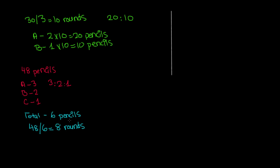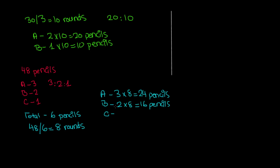Now we find how many pencils each student receives. Student A gets three pencils per round for eight rounds, so student A receives 24 pencils. Student B gets two pencils per round for eight rounds, so student B receives 16 pencils. Student C gets one pencil per round for eight rounds, so student C receives 8 pencils. We verify: 24 plus 16 plus 8 equals 48, confirming our answer is reasonable.